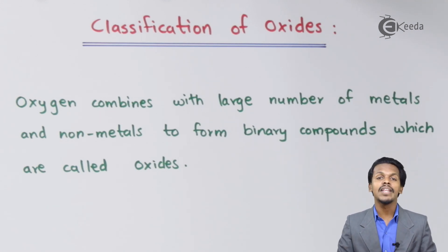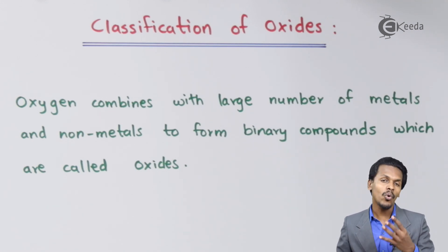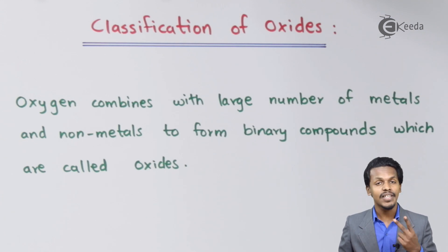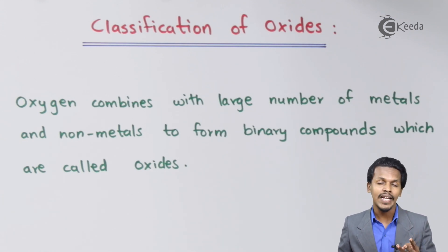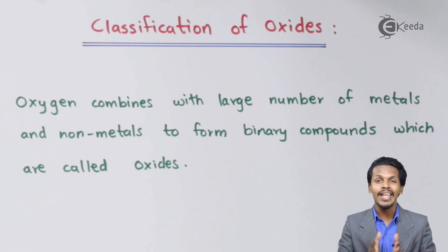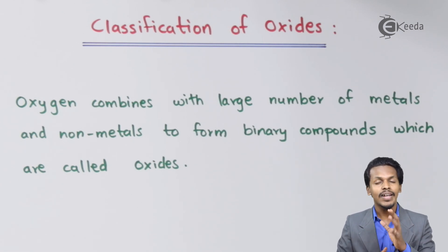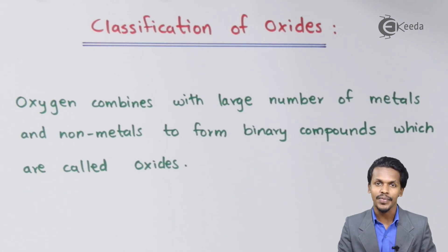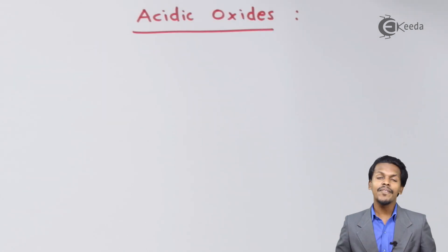Oxides are basically classified into four types: acidic oxides, basic oxides, amphoteric oxides, and neutral oxides. We are going to talk about each of these in depth and understand how these oxides are prepared and what the different classifications are.